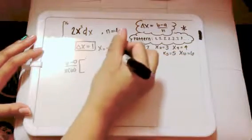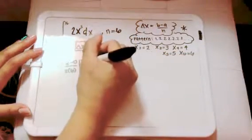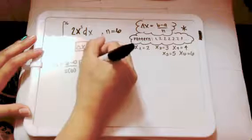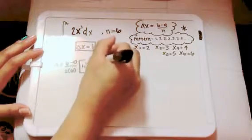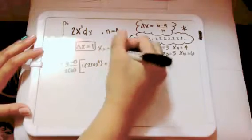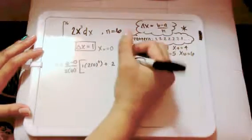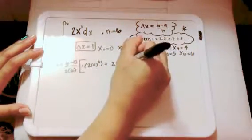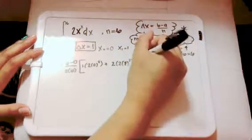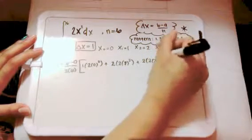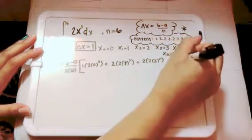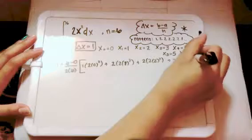So we would have 1 of the 0's. So 1 times 2 times 0 cubed, plus 2 of the 2 times 2 cubed, plus 2 of the 2 times 3 cubed,